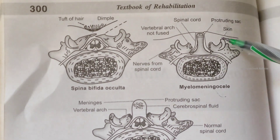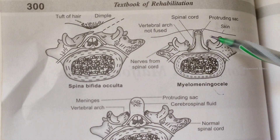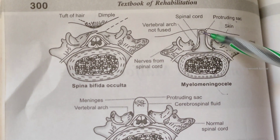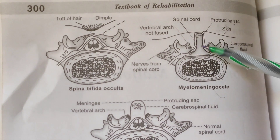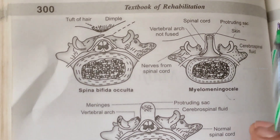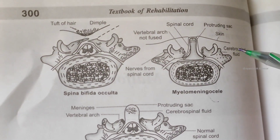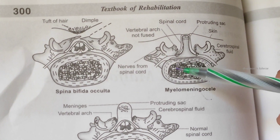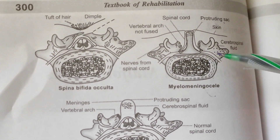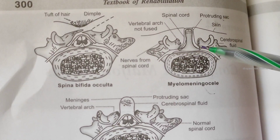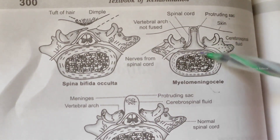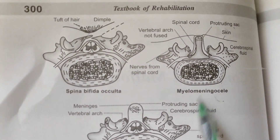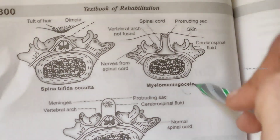Depending on the level of the region, the protruded sac contains part of the spinal cord or cauda equina. The cerebrospinal fluid does not flow properly due to obstruction. Over 80 percent of children with this disorder have associated hydrocephalus.